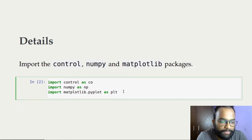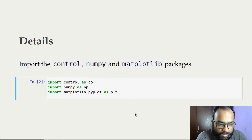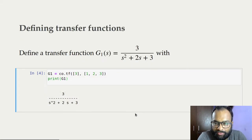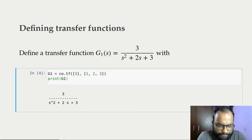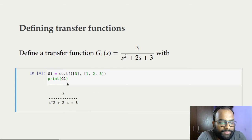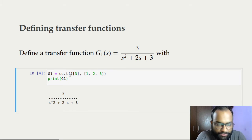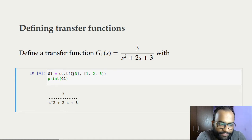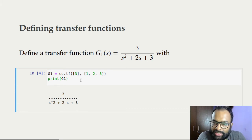Before we begin, we need to import the control system library, numpy, and matplotlib. Now let's define a transfer function. Here is a transfer function with a numerator polynomial and a denominator polynomial. From inside the control system library, we call the transfer function function and pass in two lists — the numerator coefficients and the denominator coefficients. So the numerator coefficient is 3 and the denominator coefficients are 1, 2, and 3. G1 is the resulting transfer function object.